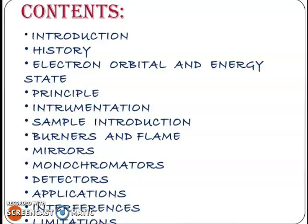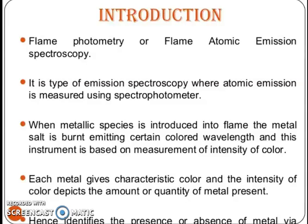Flame photometry is an instrument and it is very useful. Today we will learn about the flame photometer. We have the following contents: I will give an introduction about the flame photometer, then discuss the history, then electron orbital and energy state, then the principle, then instrumentation, then burners and flame, then mirrors, then monochromators, then detectors, then applications, then interferences, and finally the limitations of this instrument.